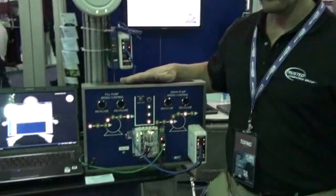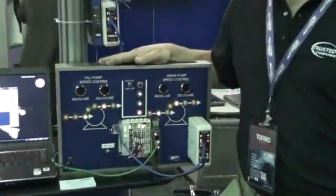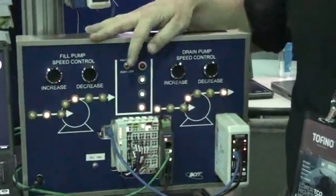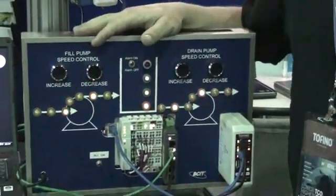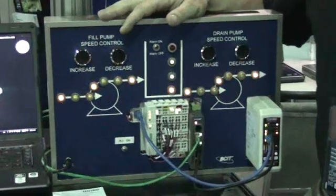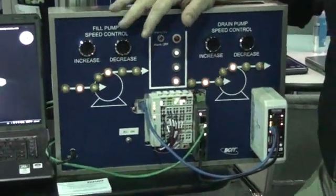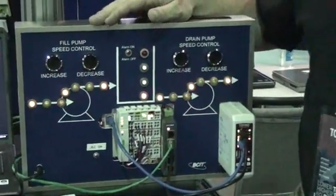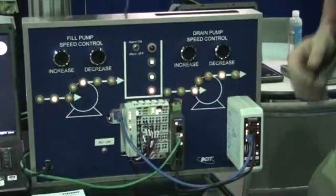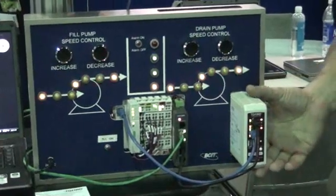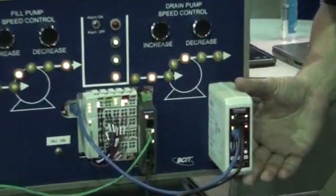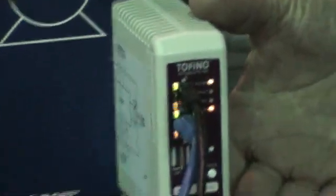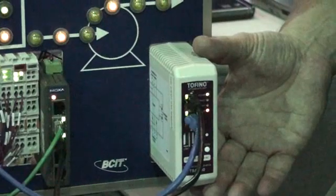Many manufacturing and automation sites today rely on embedded controllers called programmable logic controllers that have a lot of inherent vulnerabilities and are not able to run software on the device themselves to provide additional layers of protection. So what we've done with Boeing is we've developed this device which we call the Tofino Security Appliance, and this is an external hardware device that provides those layers of protection for these industrial controllers that cannot do it themselves.